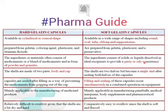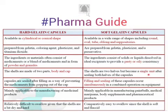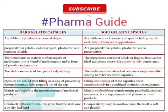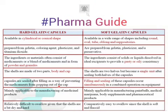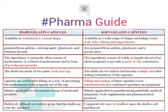Pasty or oily consistency substances are enclosed in soft gelatin capsules. Hard gelatin capsules are made of two parts: body and cap. Soft gelatin capsule shells are two halves but become a single unit after sealing. Capsules are filled and then locked so that the medicaments may not come out. Whereas in soft gelatin capsules, filling and sealing occurs simultaneously in a combined operation on equipment.